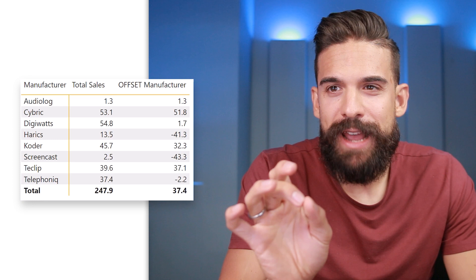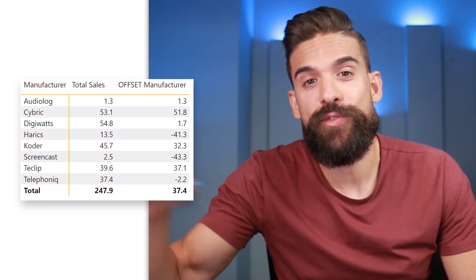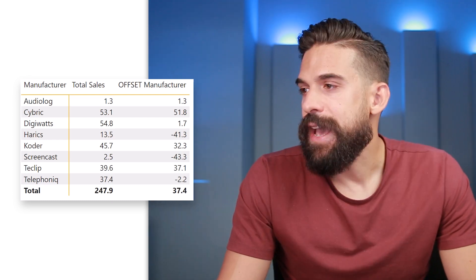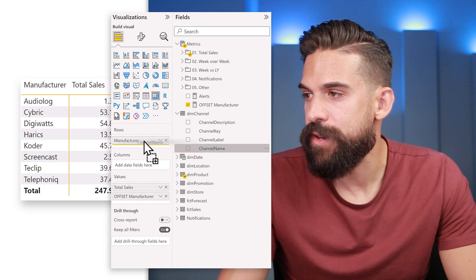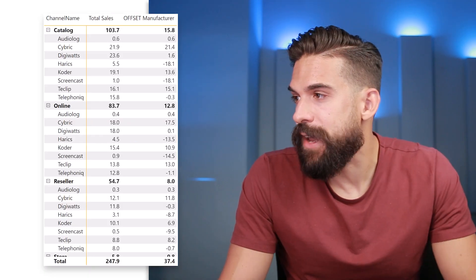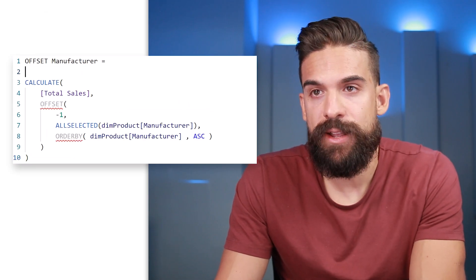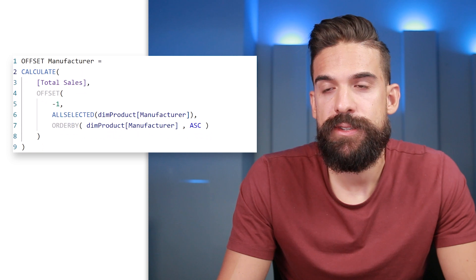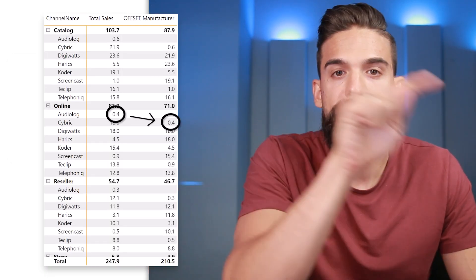Before going there, let's see what happens when we add another field onto rows. I'll take the channel name from the dim channel table and put it right above manufacturer in the matrix. Now first we have the channel, then expand down. To see what the OFFSET function does, let's go back to the measure and remove the total sales subtraction so we only look at the offset values. The logic is still the same — values are shifted by one row within that channel.